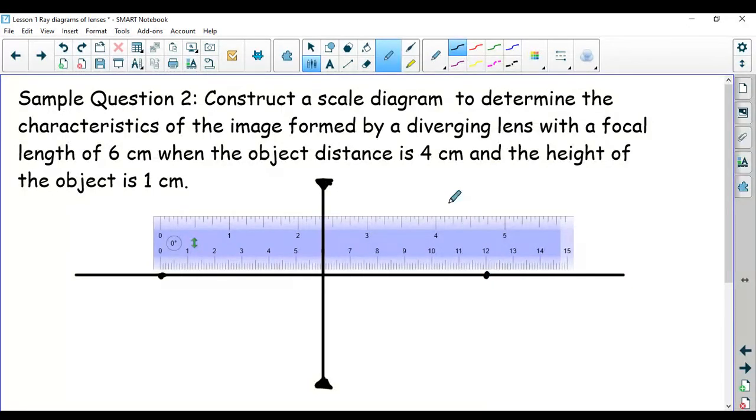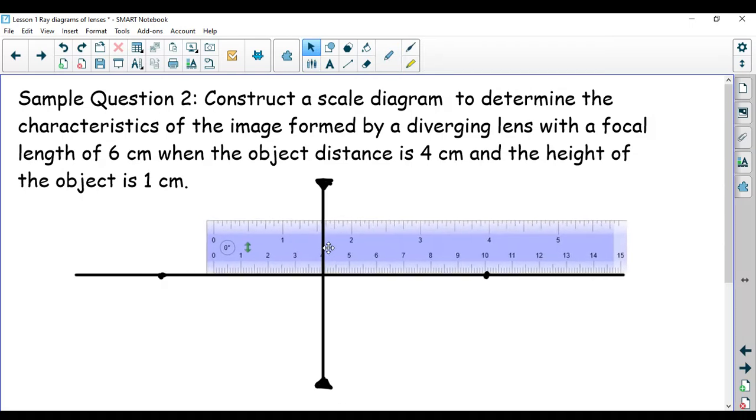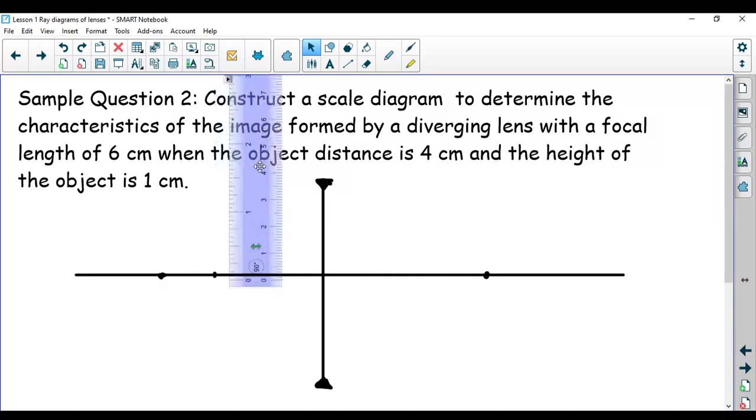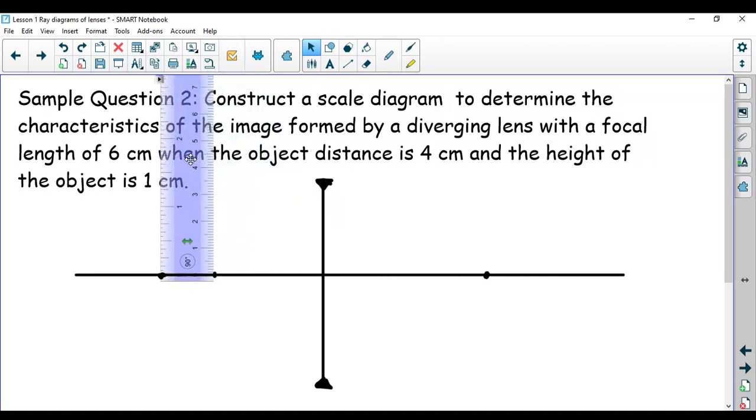Then it tells me that I need to do four centimeters from the lens. I'm going to make my object and it's going to be one centimeter tall. So all I'm doing right now is I'm going to mark where the four centimeters are, so that's where I'll put my object. Then I can rotate my ruler so that I can put my one centimeter, measure that out properly and put on my object. So there we go, this is going to be my object right here. Now I have my diagram, I can add my three lines very easily.